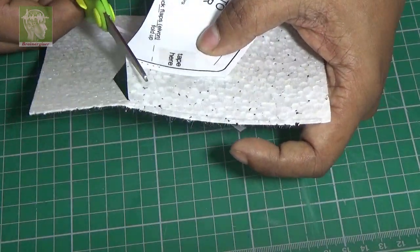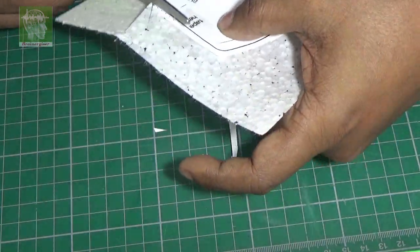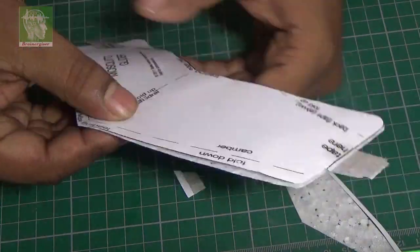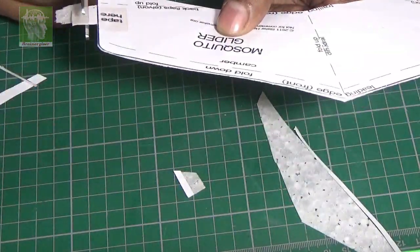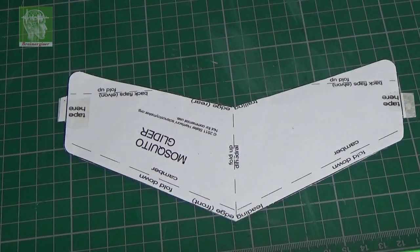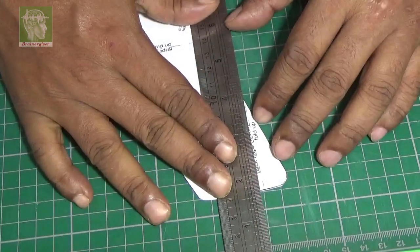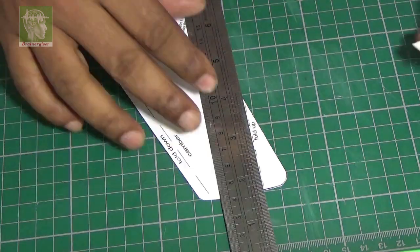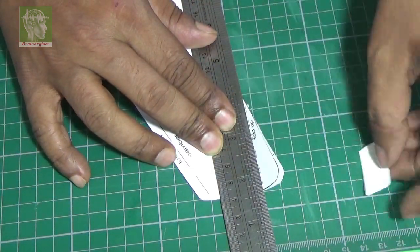See, I am cutting along it but I am not cutting the tape. I kept the tape area left. Now I am going to fold the aileron section.